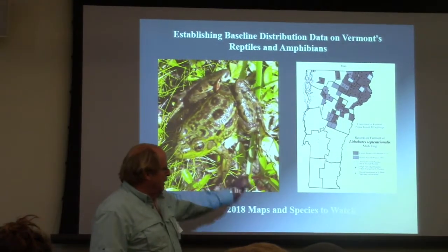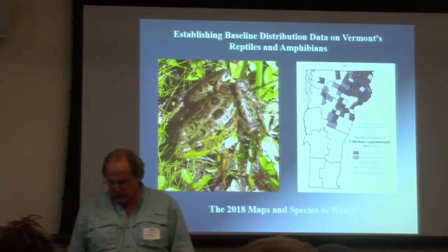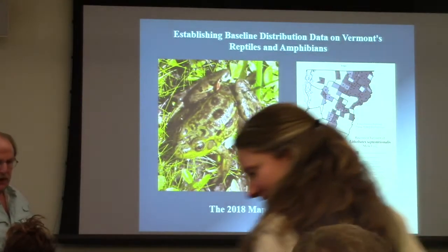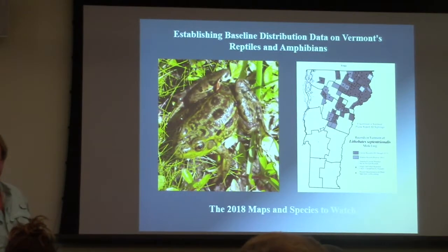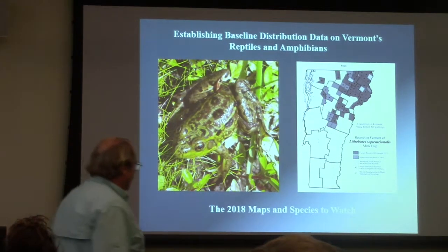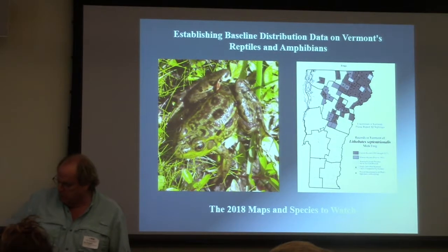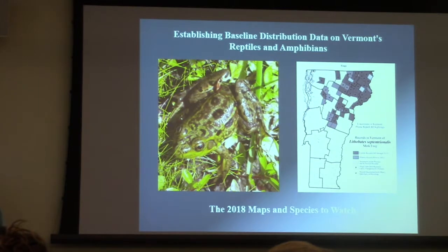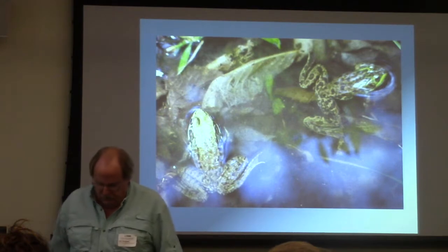The idea is to establish baselines on distribution of the reptiles and amphibians in Vermont at the beginning of the century, and we've been doing it for the last almost 25 years now. There aren't as many herpers out there as there are birders, and we certainly take advantage of all the iNaturalist data and get it into our program. I want to show you some of our maps, talk about a few species, and just have some fun with these critters.